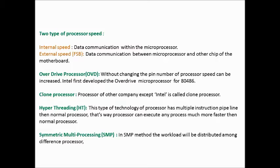Microprocessors have two types of speed: internal and external. Internal speed is when data communication occurs within the microprocessor. External speed, or FSB (Front Side Bus), is data communication between the microprocessor and other chips on the motherboard.